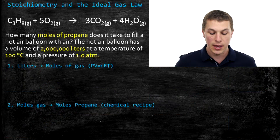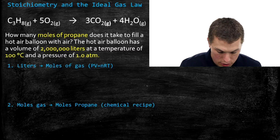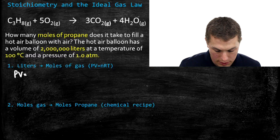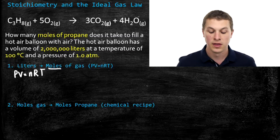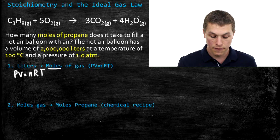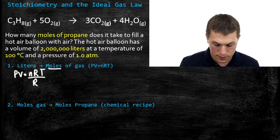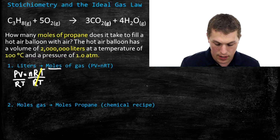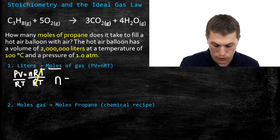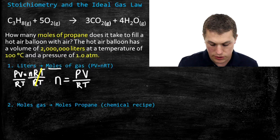So the first thing we're going to do is go from liters to moles of gas using the ideal gas law, PV = nRT. If we want to solve for moles, we rearrange by dividing both sides by RT, giving us n = PV / RT. Now we're pretty close to ready to plug in our numbers.